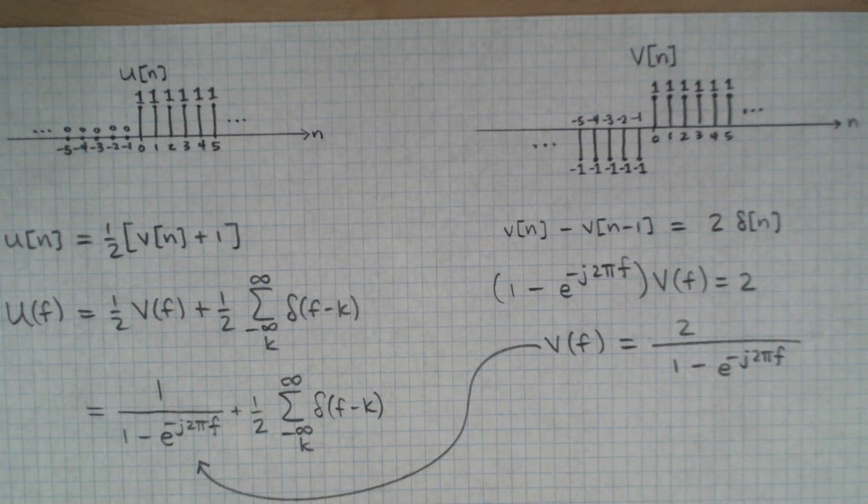So for your homework assignment, please work through all of these steps, draw pictures, explain and justify each of the steps, and turn that in for the homework problem on proving the Fourier transform of the unit step function.